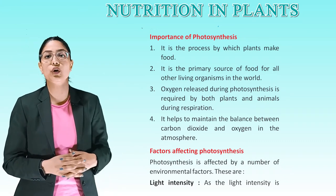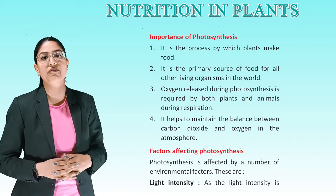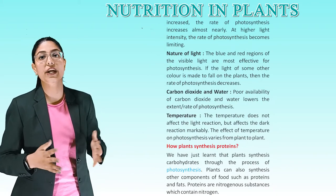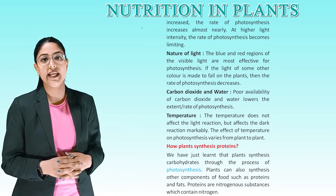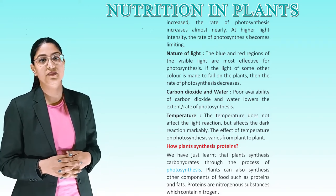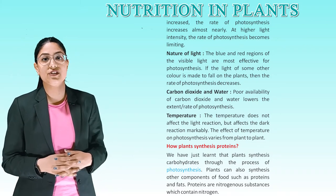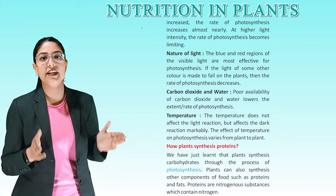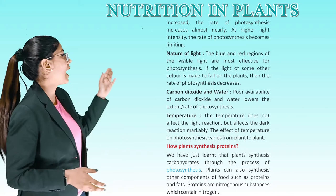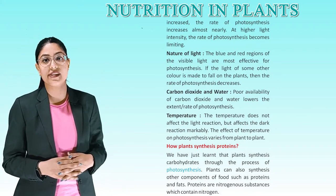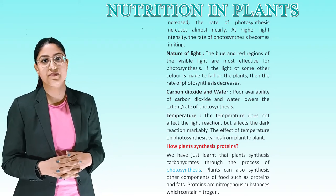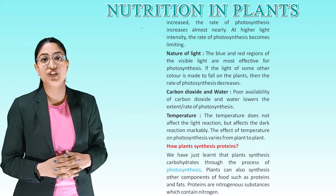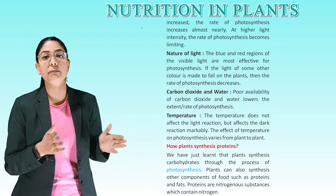Now let's see the factors affecting photosynthesis. Photosynthesis is affected by a number of environmental factors. First, light intensity: as light intensity increases, the rate of photosynthesis increases almost linearly, but at higher light intensity the rate becomes limiting. Second, nature of light: the blue and red regions of visible light are most effective for photosynthesis; if light of some other color falls on plants, the rate of photosynthesis decreases. Third, carbon dioxide and water: poor availability of carbon dioxide and water lowers the rate of photosynthesis. Fourth, temperature: temperature does not affect the light reaction but markably affects the dark reaction, and the effect varies from plant to plant.